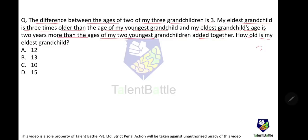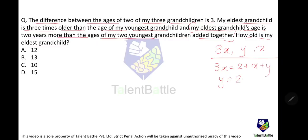Let the youngest grandchild be x years old, so the eldest would be 3x years old. Let the middle one be y years old. According to the second condition, the eldest grandchild's age is two years more than the addition of the younger two. So y comes out to be 2x minus 2 years.